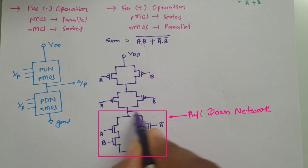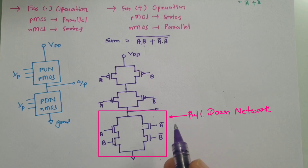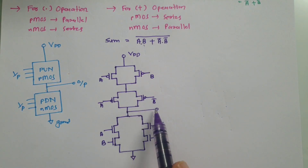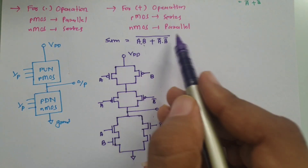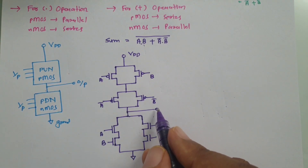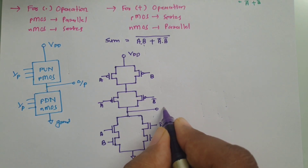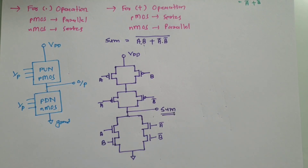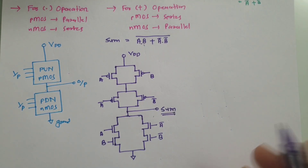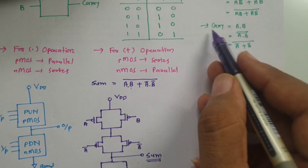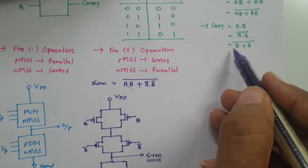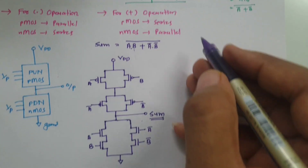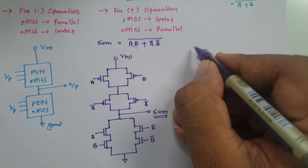The output taken from between the networks gives (AB + ĀB̄)̄, and since the bar is already provided by the CMOS inversion, we do not need to connect an additional inverter. This output is our Sum. Now for Carry: Carry = A·B = (Ā + B̄)̄.